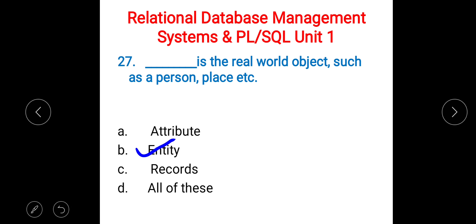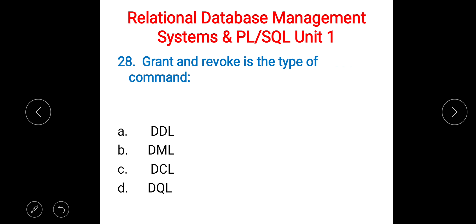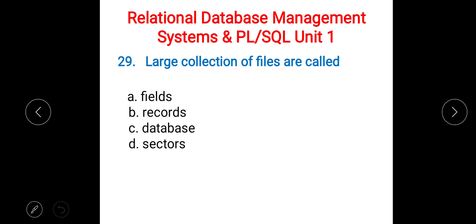Next: GRANT and REVOKE are the types of which command? A) DDL (Data Definition Language), B) DML (Data Manipulation Language), C) DCL, D) DQL. The right answer is C) DCL — Data Control Language.